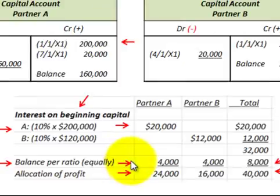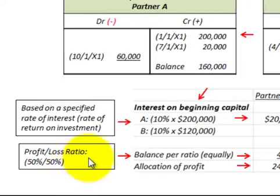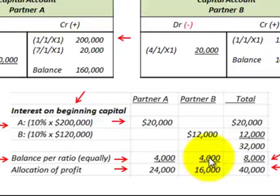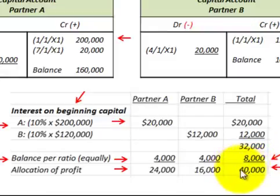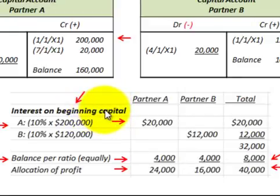The balance remaining to allocate is $8,000, and this is where the profit and loss ratio comes in. For this example, they're using a 50/50 split — each partner gets half of the remaining profit. So partner A gets $4,000 and partner B gets $4,000. Adding the $32,000 and $8,000 together, we have our total allocation of $40,000. This table was based on the capital interest as of the beginning of the period, which in this case was the 1/1/X1 date.